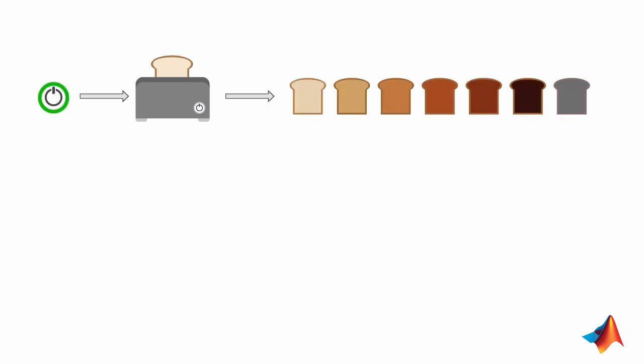You put a slice of bread in the toaster, set its timer level, and then turn it on. Depending on how long you toast the bread, you can get different colors.